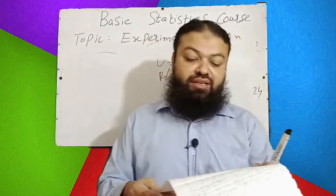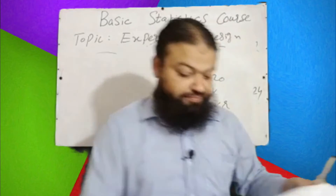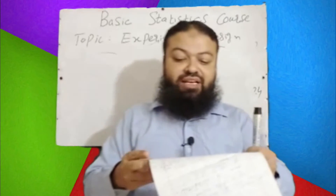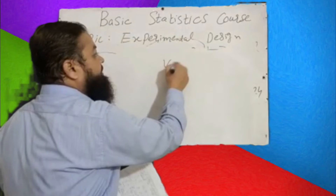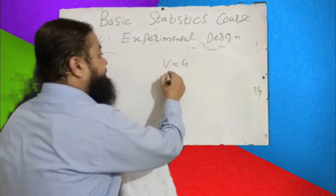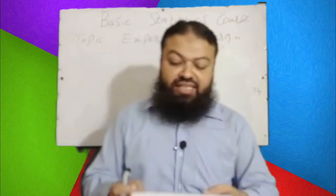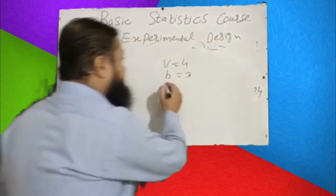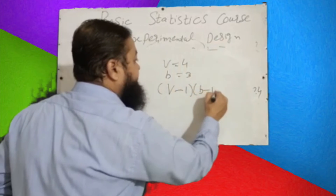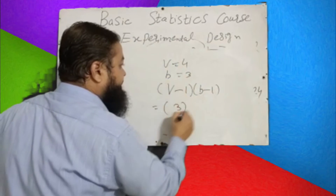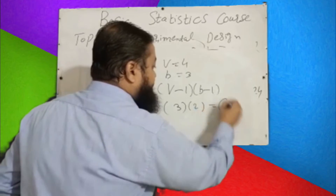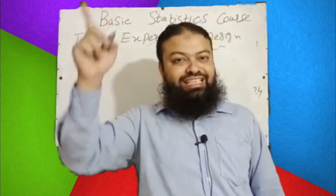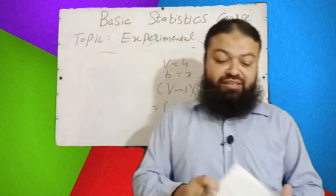Question number eleven: In a Randomized Block Design of four treatments (v = 4) and three blocks (b = 3), the degree of freedom of the residual (error) sum of squares is: (v − 1)(b − 1) = (4 − 1)(3 − 1) = 3 × 2 = 6. The correct option is 6. The degree of freedom for error is (b − 1)(v − 1).